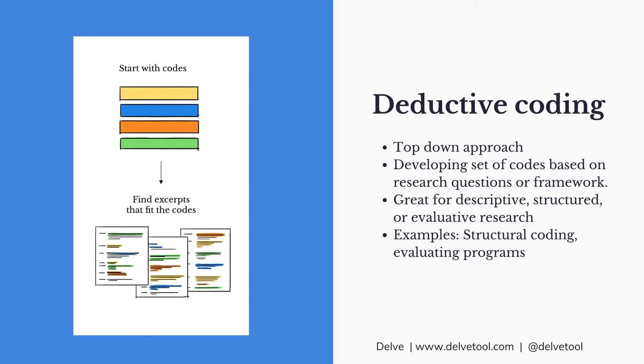This is a really great process if you're doing anything that's descriptive or very structured, if you're doing a program evaluation. The benefit of doing deductive coding is you get to start off with a set of codes that you determine before you look at your data, and then you look at your data to see what parts of it fit those codes.